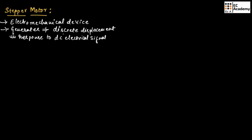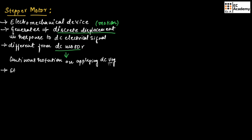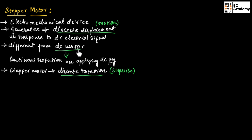Here, discrete displacement means motion. It is different from a DC motor. A DC motor produces continuous rotation on applying DC voltage, whereas a stepper motor produces discrete rotation when we apply DC voltage. Discrete rotation means stepwise rotation, so stepper motor is different from DC motor.